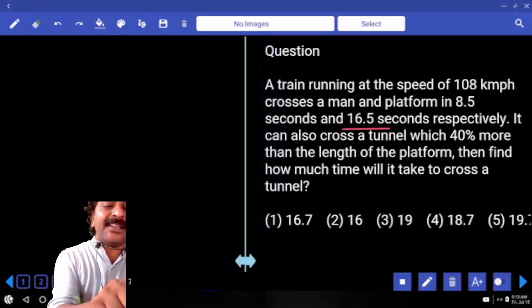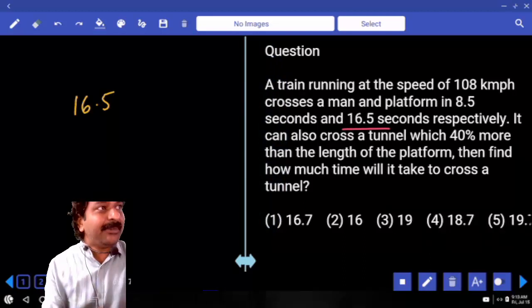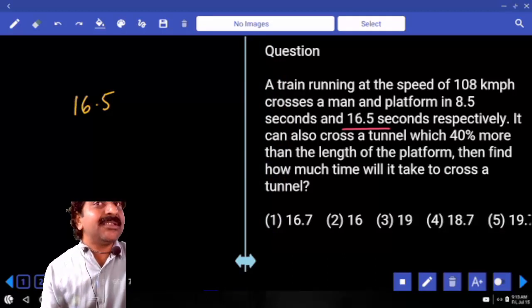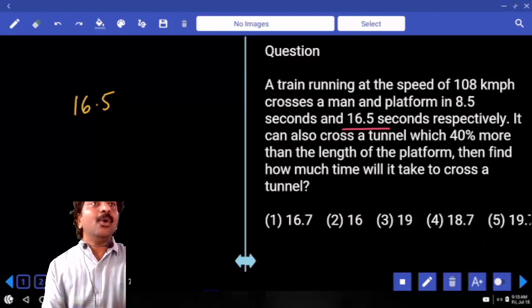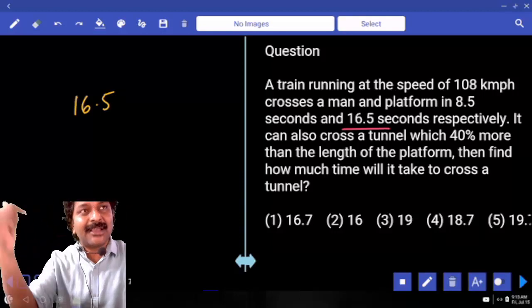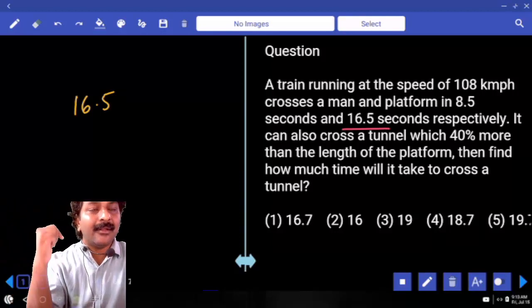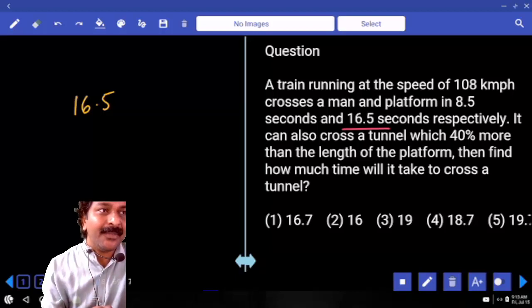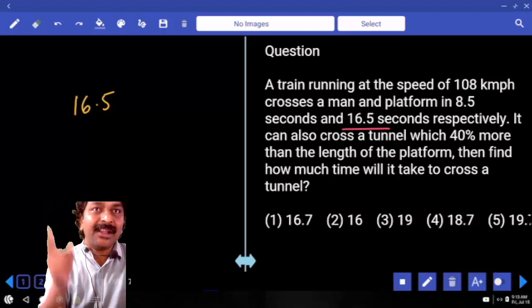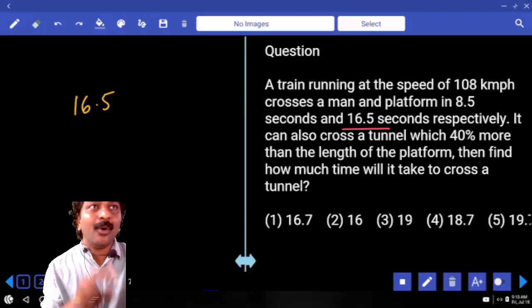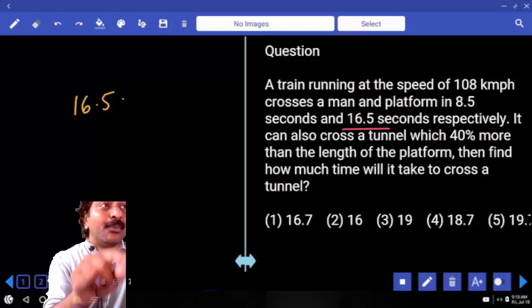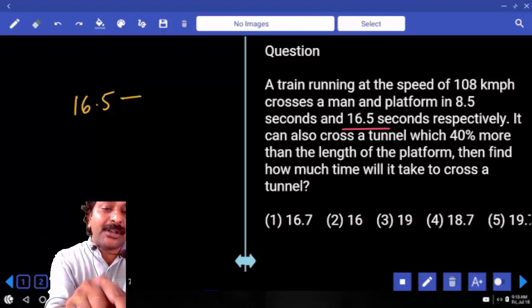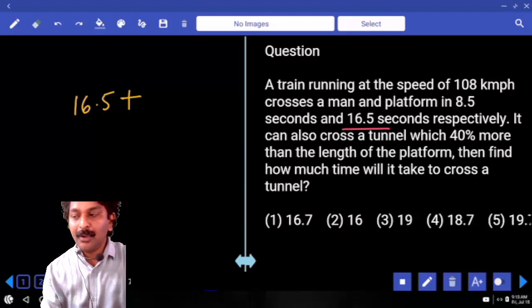16.5 seconds it takes for the same train to cross the platform. But now it has to cross the tunnel whose length is more than the platform length. That means train length is same, train speed is also same. Only difference is platform versus tunnel. Now the tunnel length is more than platform length. That means will it take more time or less time?